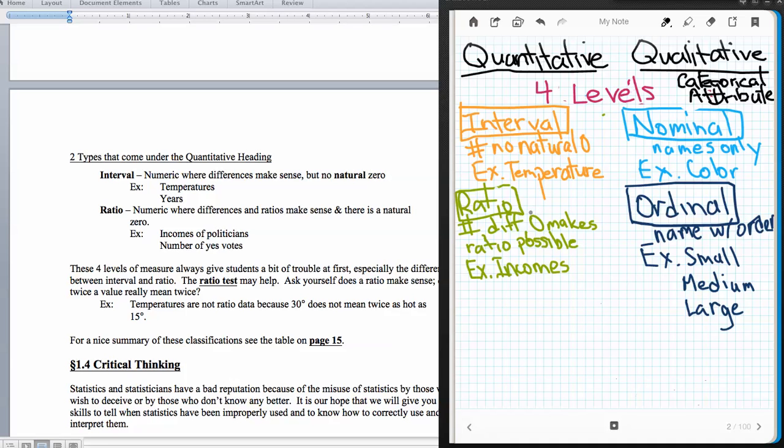The highest level of measure, the last level of measure, is ratio data. In ratio data, there is a natural zero, differences make sense, and a ratio is possible. A lot of times we'll do a ratio test. We'll say, does it make sense to say this is twice that, or this is half that, or this is three quarters? If the answer is yes, that's a pretty good indication that it's ratio data.